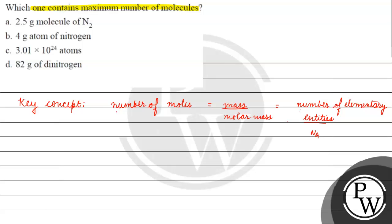Option A is 2.5 gram molecules of nitrogen. Whenever we see 'gram atom' or 'gram molecule,' it means moles. So 2.5 gram molecules means 2.5 moles of nitrogen. Therefore, the number of molecules will be 2.5 times Avogadro's number.